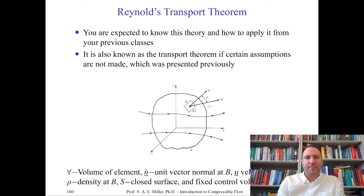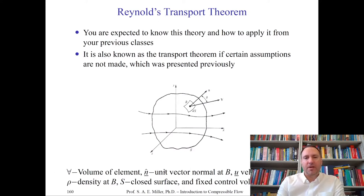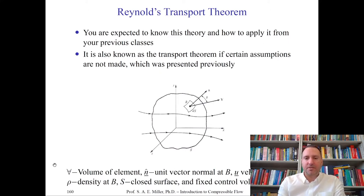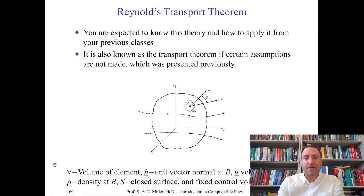Additional nomenclature: capital V is a volume element; n-hat is a unit normal vector at location B; U or V is velocity at location B; rho is density; S is a closed surface. Remember, the trick to solving these problems is to always define the control volume carefully — careful selection makes the analysis simpler.